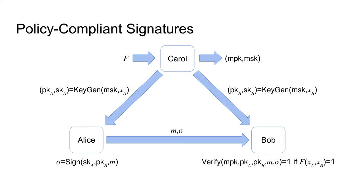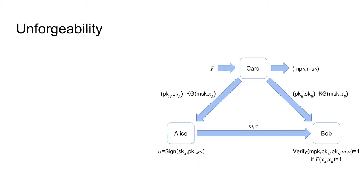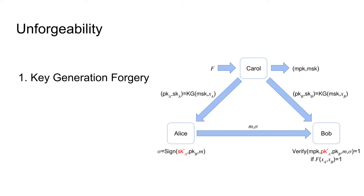We can directly see that the notion of policy-compliant signatures provides a good solution for our motivational example. To achieve unforgeability and attribute hiding, our policy-compliant signature scheme also needs to achieve these notions. We begin with the notion of unforgeability, where we have three different types of forgeries to prevent. The first type is a key generation forgery, where a malicious Alice is able to generate a valid signature for a public key that has not been generated by Carol. Since Carol did not assign any attributes to this maliciously generated public key, it cannot result in a valid policy evaluation.